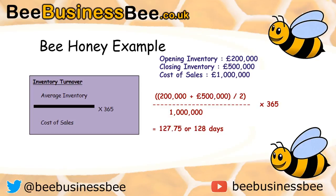Hopefully you've managed to complete this. First, take opening inventory of £200,000 and add it to closing inventory of £500,000 to get £700,000, then divide by two to get average inventory. Then divide that by cost of sales of £1 million and multiply by 365, giving 127.75 — or realistically 128 days. So inventory is turned over every 128 days.